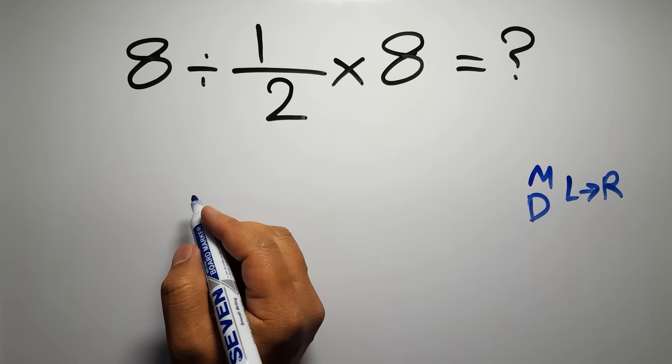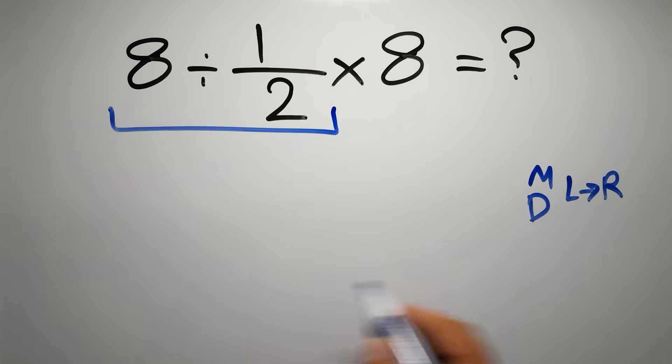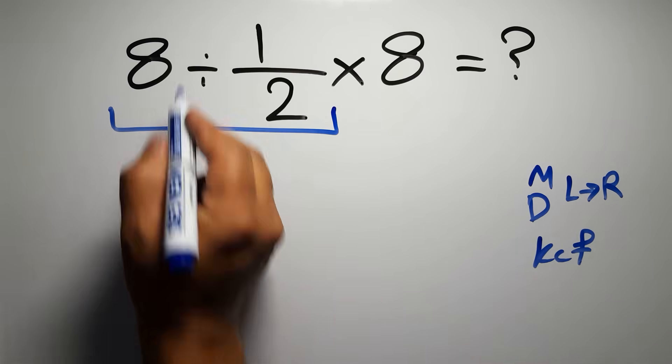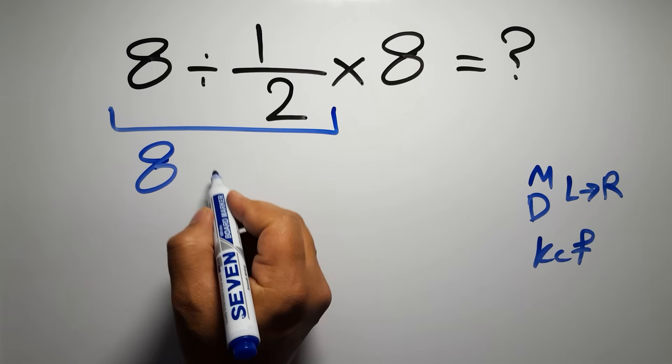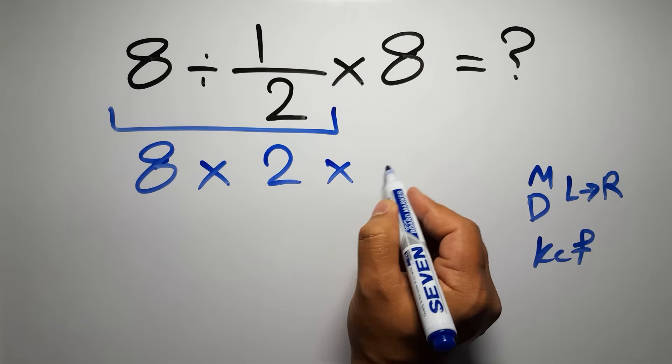So first this division: 8 divided by 1 over 2. According to the KCF rule—K stands for keep, C stands for change, and F stands for flip—we can write: keep the first fraction, change division to multiplication, and flip the second fraction, then times 8.